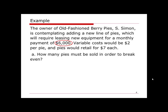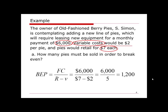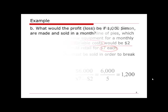The fixed cost is the monthly leasing cost of six thousand dollars. Variable cost is two dollars per pie, and revenue is seven dollars per unit. With this information, we calculate the break-even point as fixed cost divided by unit revenue minus unit variable cost, which gives us twelve hundred. To break even, we need to sell twelve hundred pies per month.